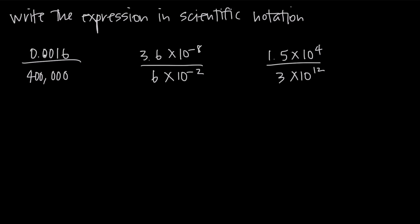For the top number 0.0016, we locate our decimal place and move it to the right to get it between 1 and 6 — that's 1, 2, 3 places. So this turns into 1.6. That gives us 1.6 times 10 to the negative 3, because we moved the decimal place to the right.